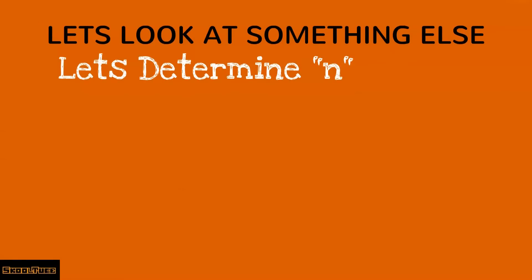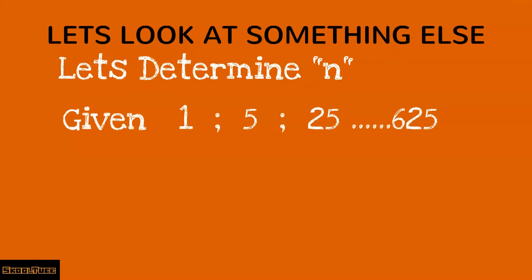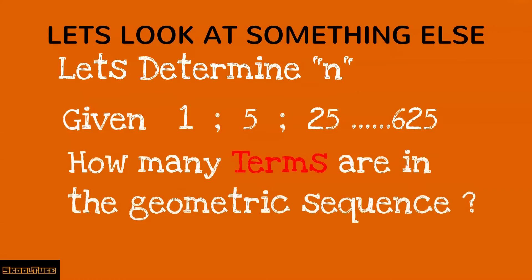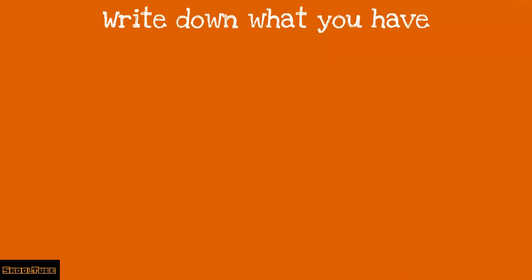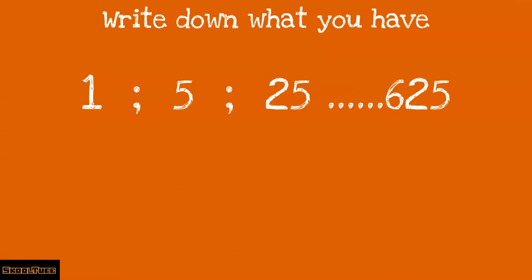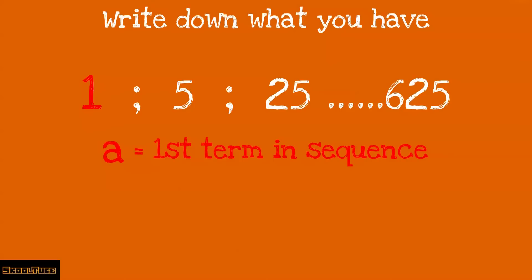Now let us determine n. Given the sequence 1, 5, 25, some terms up to 625 — how many terms are in the geometric sequence? We write down what we have. A is 1 (the first term), and the constant ratio R: since 1 times 5 is 5, and 5 times 5 is 25, or 5 divided by 1 is 5, and 25 divided by 5 is 5.